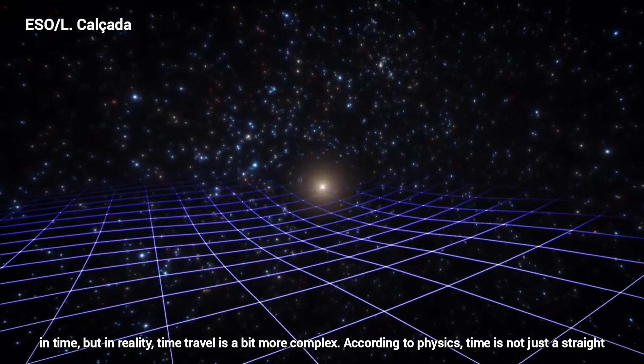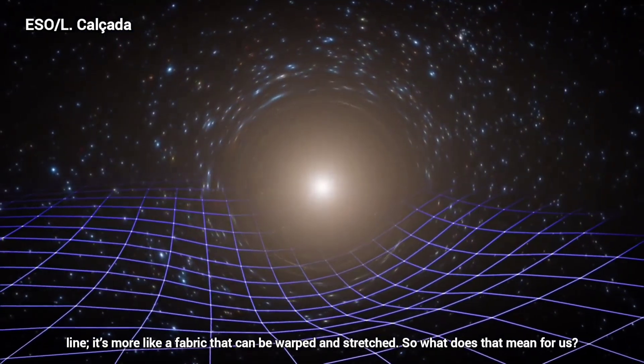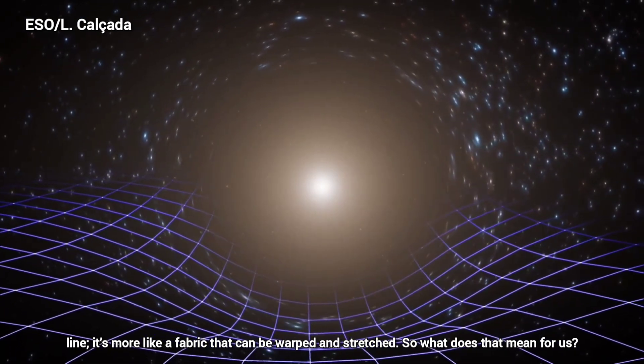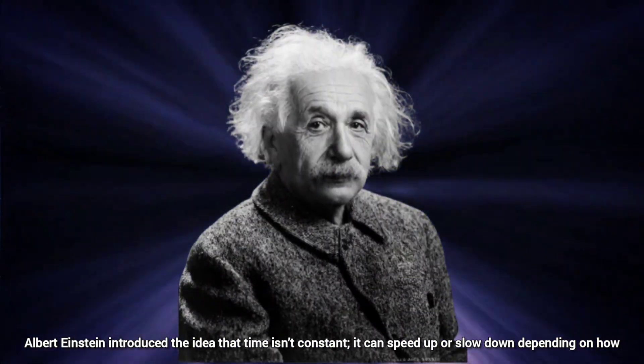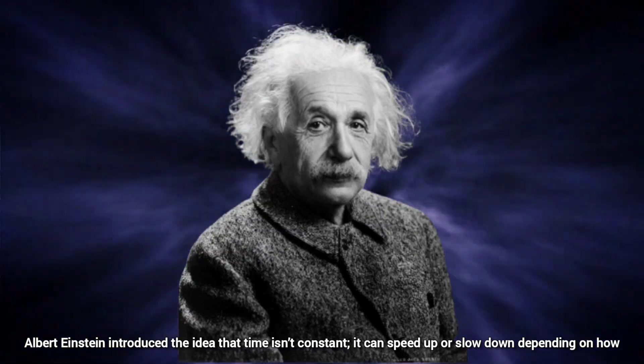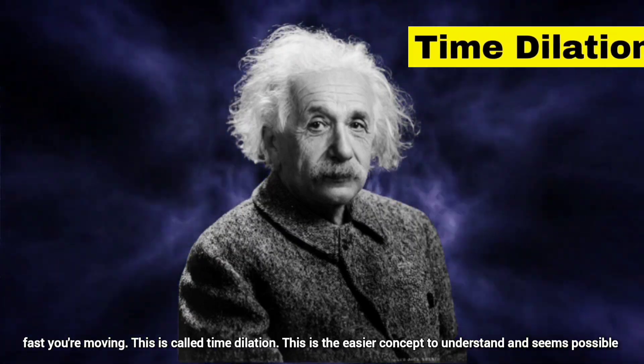According to physics, time is not just a straight line, it's more like fabric that can be warped and stretched. Albert Einstein introduced the idea that time isn't constant. It can speed up or slow down depending on how fast you are moving. This is called time dilation.